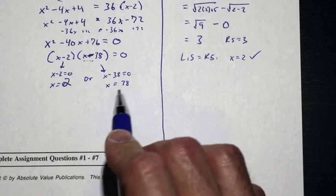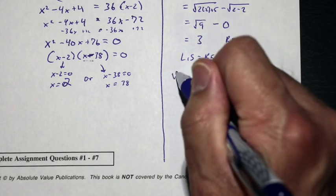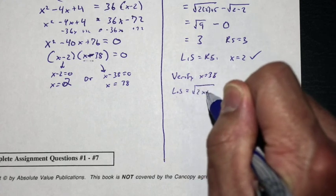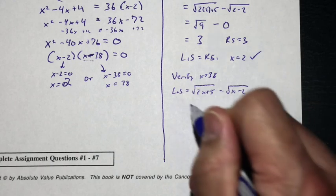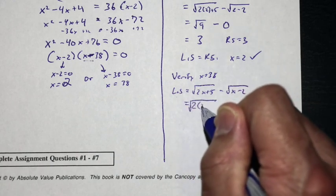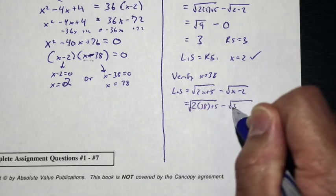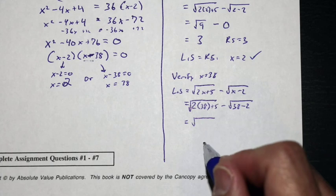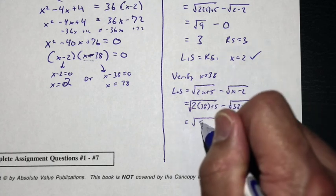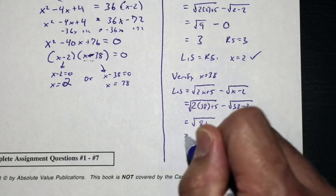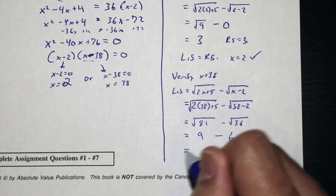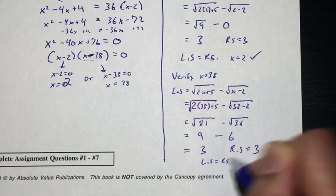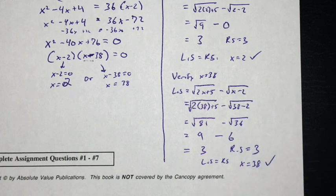Now let's verify x equals 38. The left side is the square root of 2 times 38 plus 5 minus the square root of 38 minus 2. That's the square root of 76 plus 5, which is the square root of 81, minus the square root of 36. That's 9 minus 6, which equals 3. The right side is also 3, so the left side equals the right side — x equals 38 is also a valid solution.